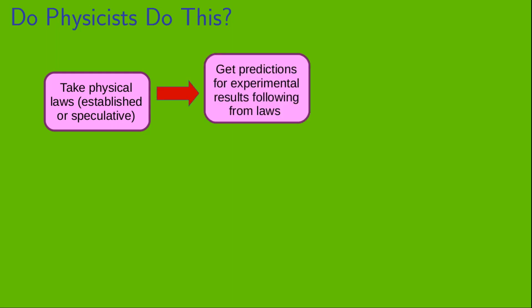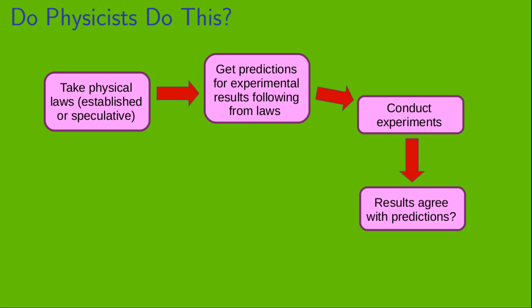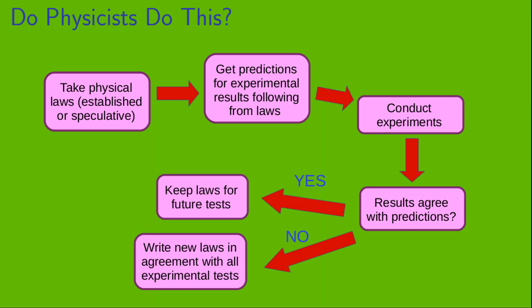In physics, we do the following. We take a set of physical laws. Now, these laws might be very well established, or they might be new speculative laws that we're eager to test. Then, we take those laws and get predictions for experimental results following from them. Next, we conduct the relevant experiments. And then we ask, do the results of those experiments agree with the predictions of those physical laws?